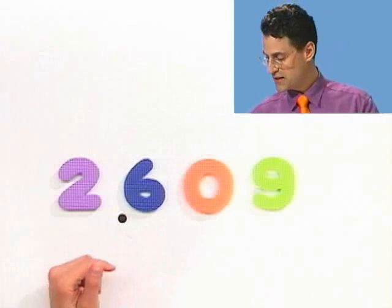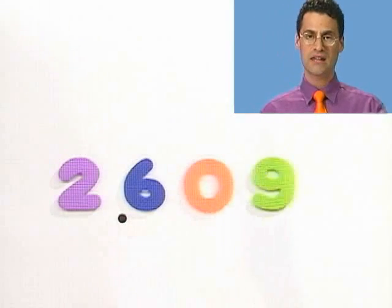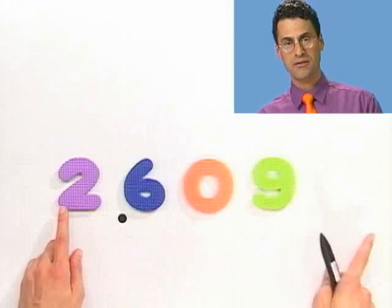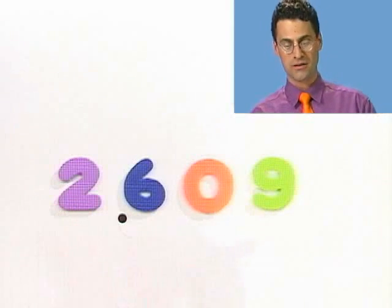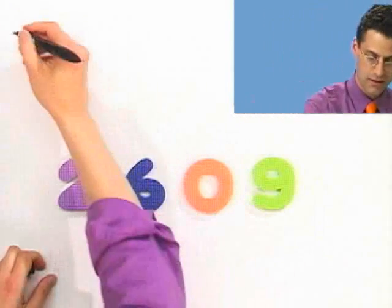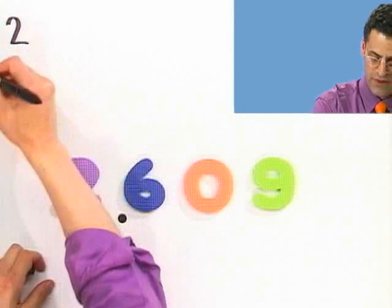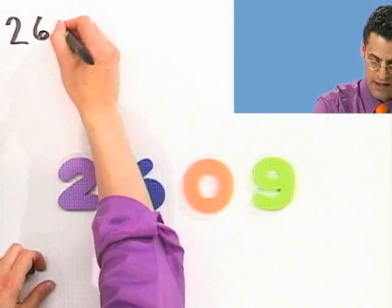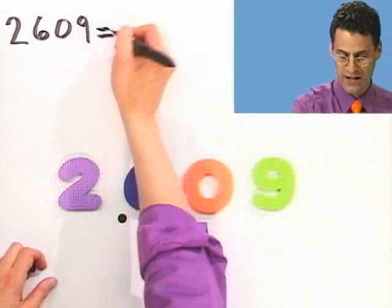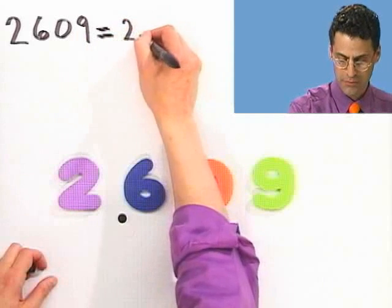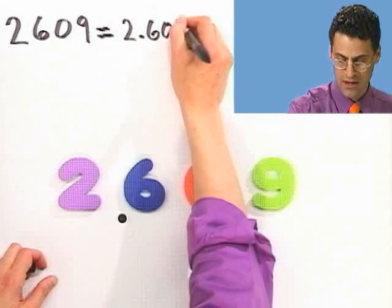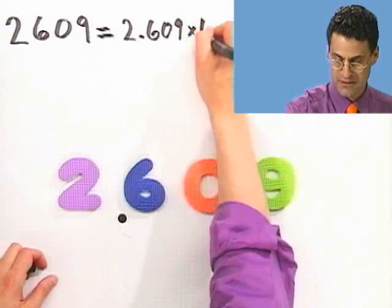Scientific notation allows us to write numbers that are big or very small as just a number between 0 and 10. So it would be something point stuff, times 10 to the right power.